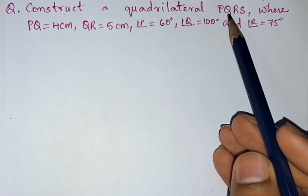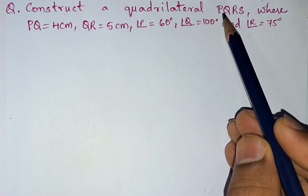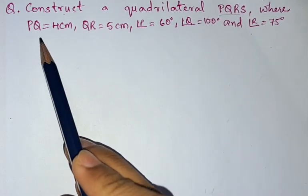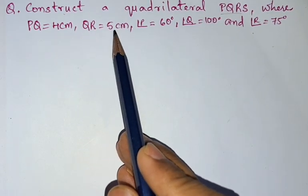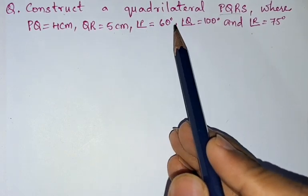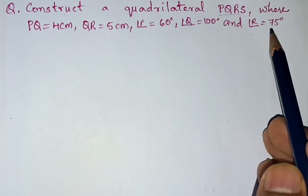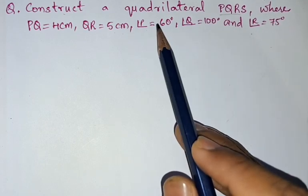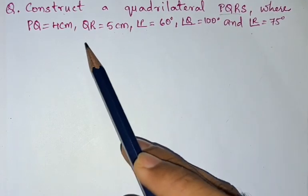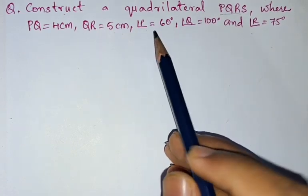Construct a quadrilateral PQRS where PQ equals 4 centimeters, QR is equals to 5 centimeters, angle P equals 60 degrees, angle Q equals 100 degrees, and angle R equals 75 degrees. So there are three angles and two sides given.